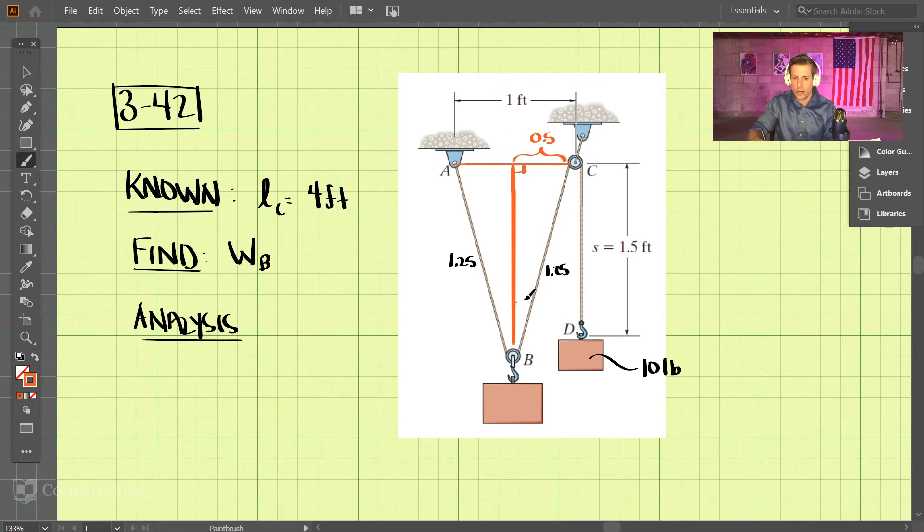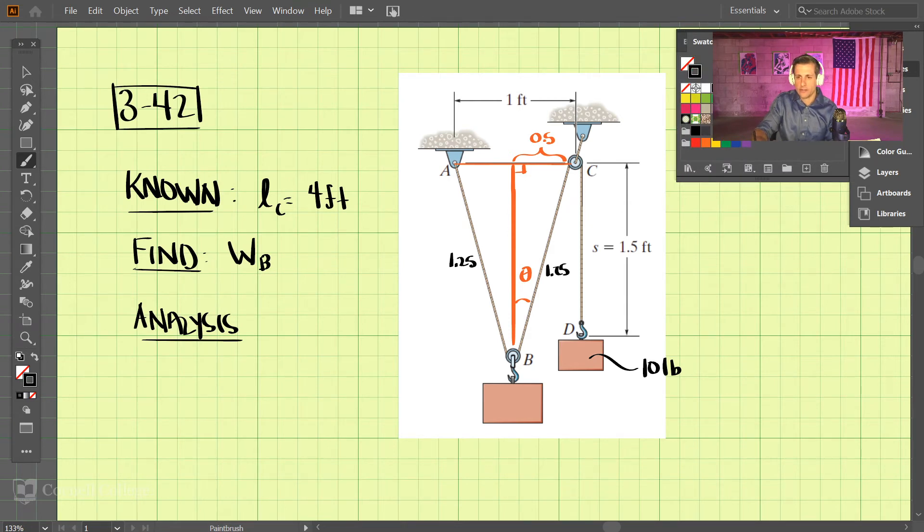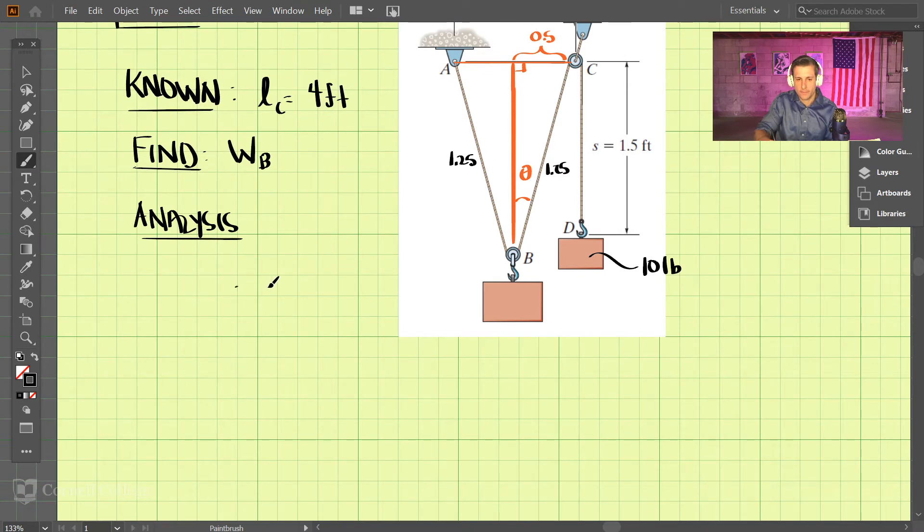And what we're trying to find is we want to know this angle here, and we'll call that theta. So let's proceed to our analysis. So if we just draw that triangle, we have 0.5, and then this is 1.25 over here.